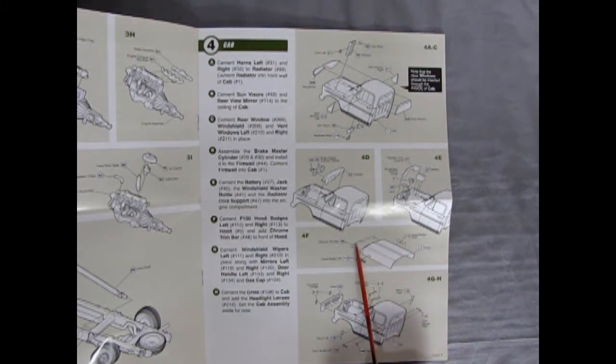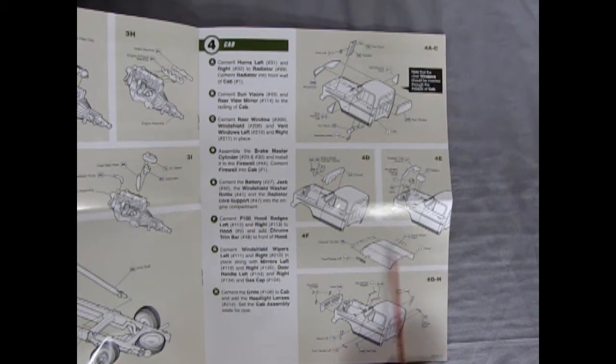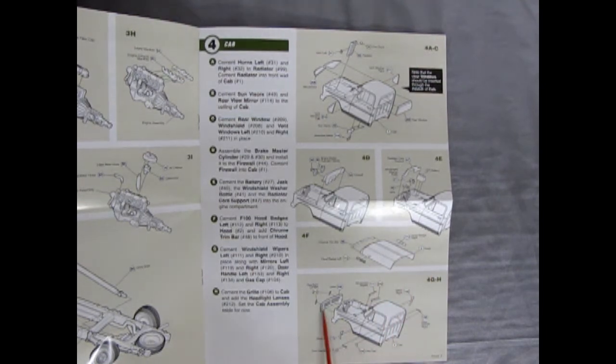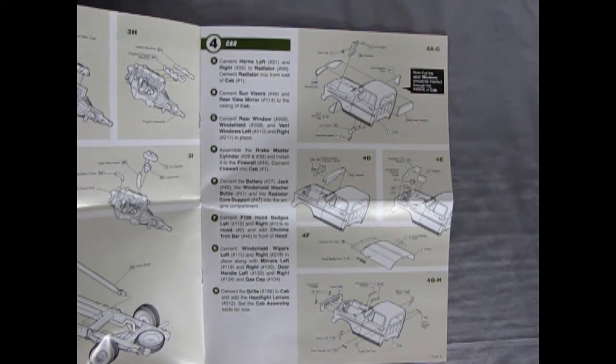Then you've got your firewall going in here with your right and left brake master cylinder. Our radiator core support and windshield washer bottle. We've got a jack going in there and a battery. Cool that the jack is up front here under the hood. Then speaking of the hood, there it is with chrome trim bar in the front and right and left hood badges. Then there's a cab getting on the right and left door handles, the gas cap, the mirrors, windshield wipers, the grille, headlight lenses. So it goes together all nicely there.